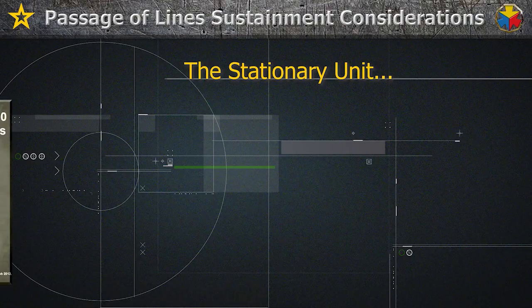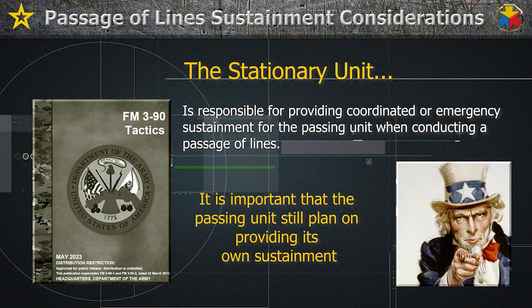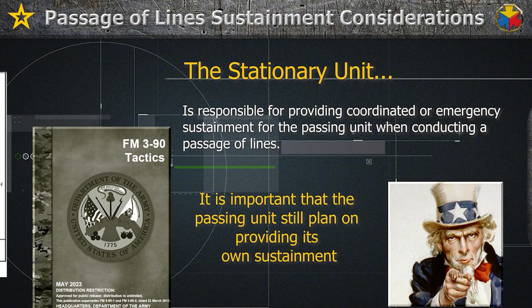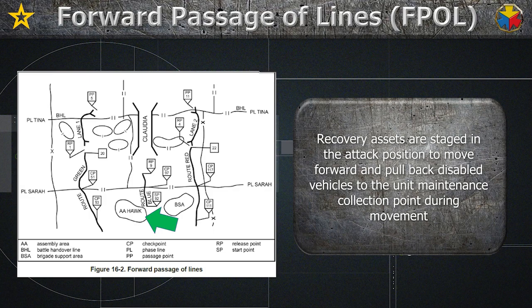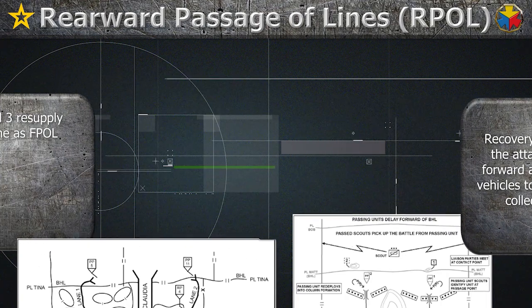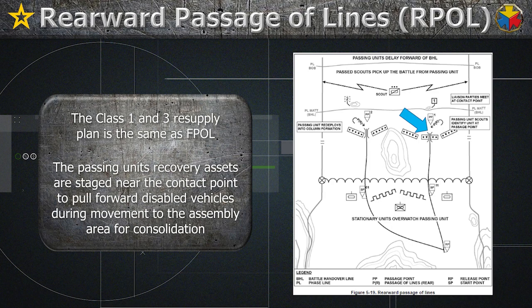FM 3-90 states the stationary unit is responsible for providing coordinated or emergency sustainment for the passing unit when conducting a passage of lines; however, it is important that the passing unit still plans on providing its own sustainment. In an FPOL, the passing unit conducts an internal Class 1 and 3 resupply in its attack position prior to moving through the passage point, and recovery assets are staged in the attack position to move forward and pull back disabled vehicles to the unit maintenance collection point. In an RPOL, the Class 1 and 3 resupply plan is the same as the FPOL, and passing unit recovery assets are staged near the contact point to pull forward disabled vehicles during movement to the assembly area for consolidation.